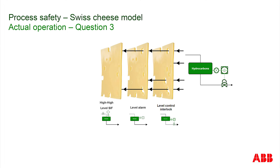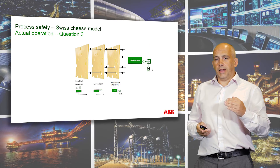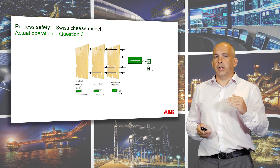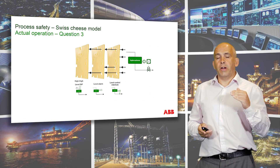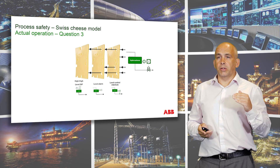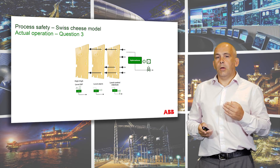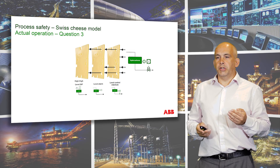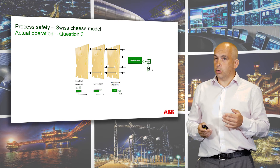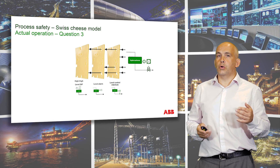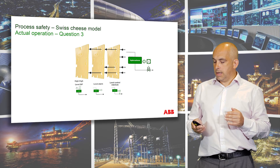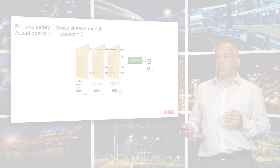So what happens in operations? Let's consider that vessel. The level in that vessel isn't controlling very well at the set point, maybe due to a disturbance or something like that. What does the operator do? He thinks to himself he can control the level better manually, and he places that controller into manual.